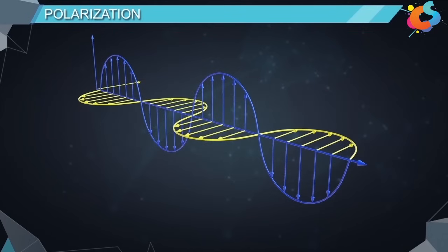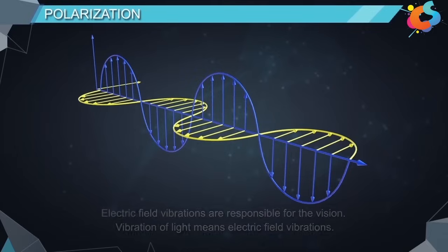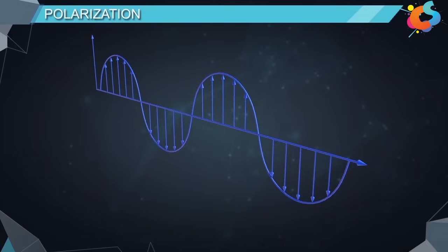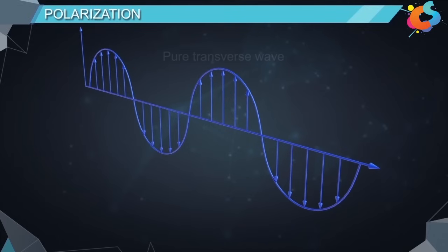It was proved that electric field vibrations are responsible for vision. Therefore, vibration of light means electric field vibrations. If we neglect the vibrations of magnetic field, the representation becomes simpler. The electromagnetic wave will then look like a pure transverse wave.